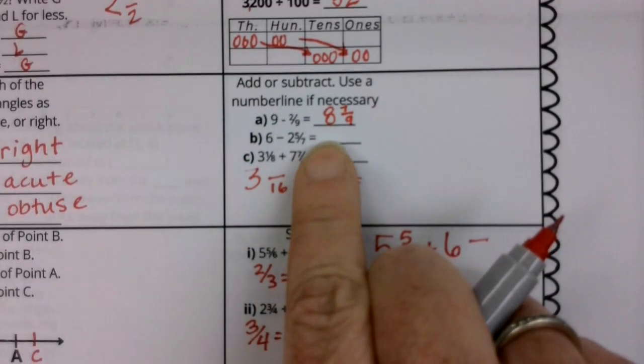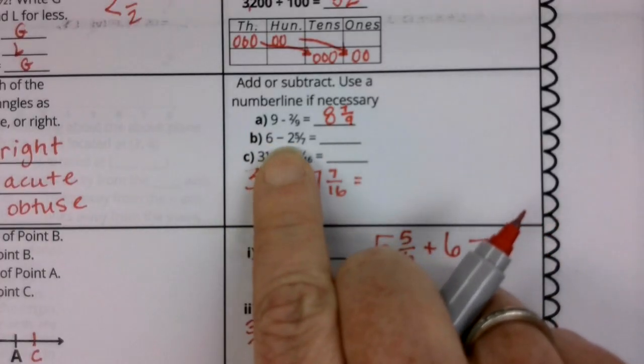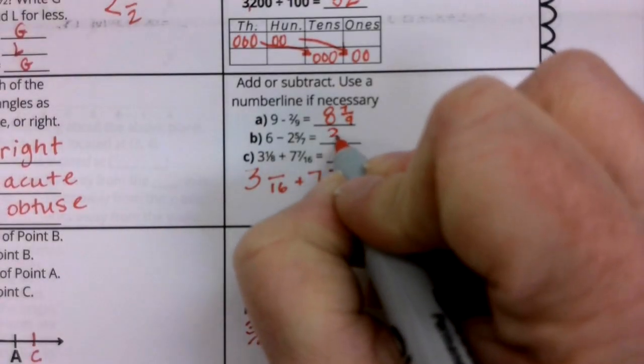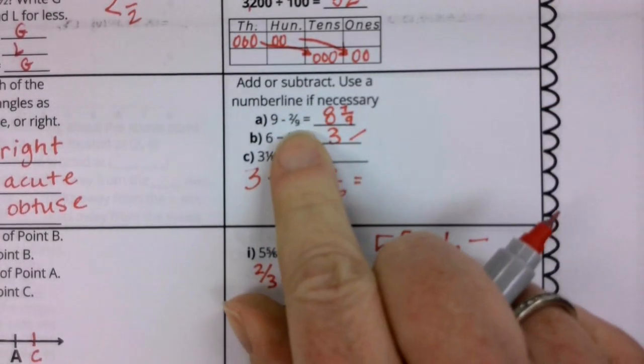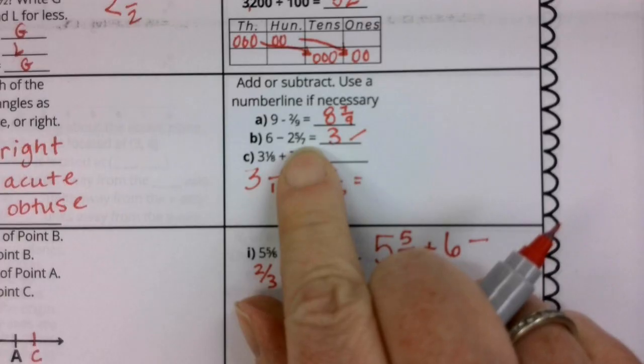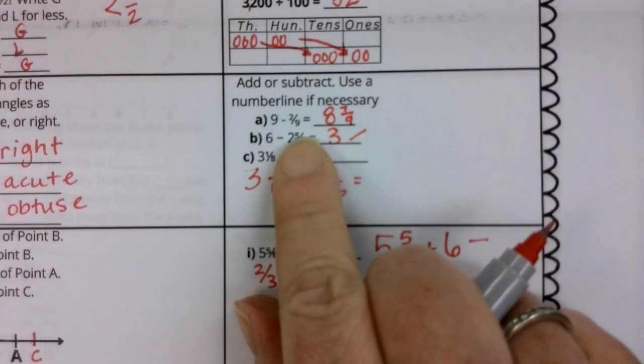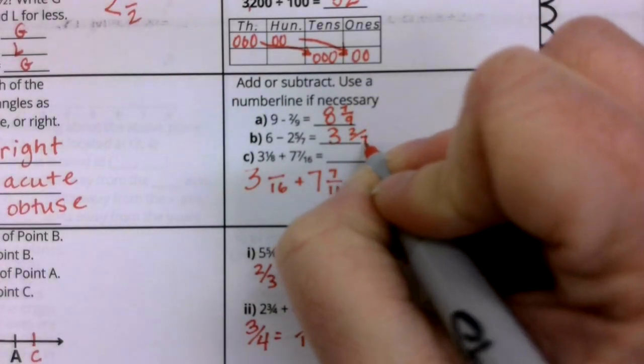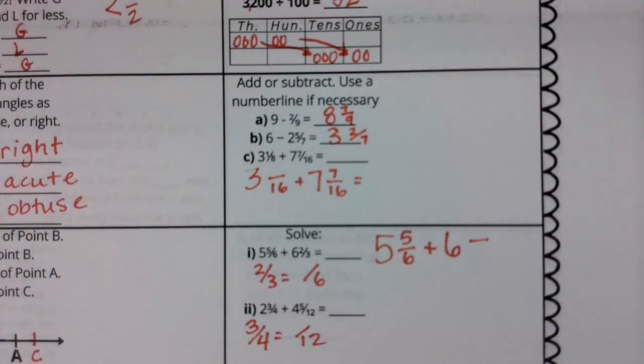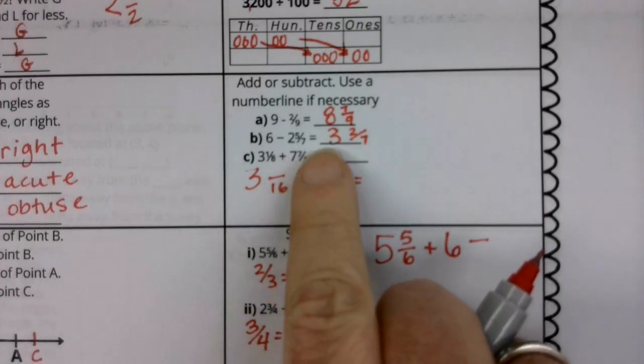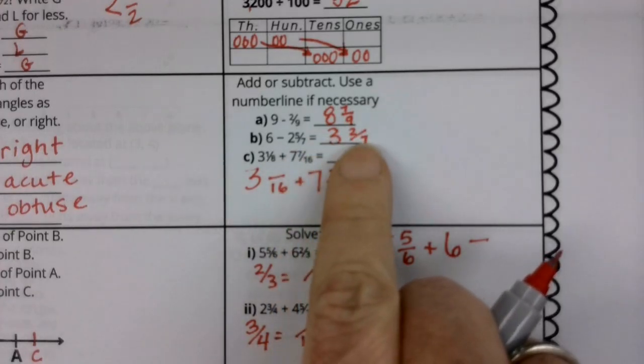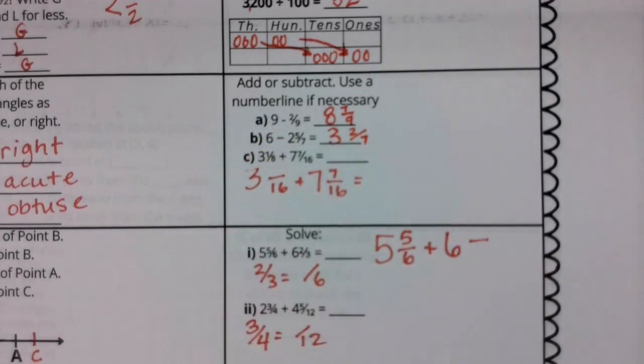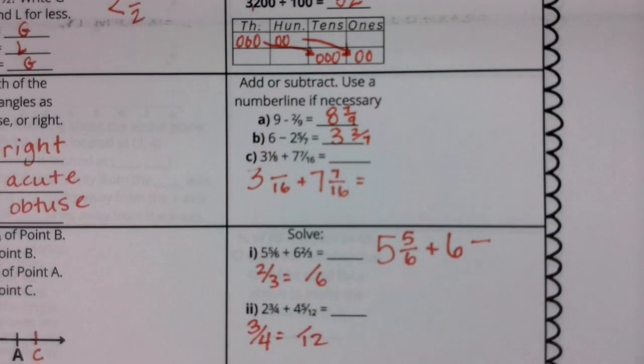Let's use the same idea for B. If I have 6 minus 2, that would be 4. But really, I'm going to put a 3 here and I'm going to think about the fraction of 1 that I have with 5 sevenths. If I have 5 over 7, I know that 2 over 7 is going to be that other fraction of 1, 5 sevenths plus 2 sevenths is a hole. That hole plus 3, that's going to get me to my 6, which was my starting point.